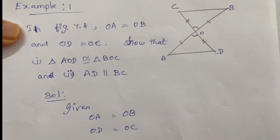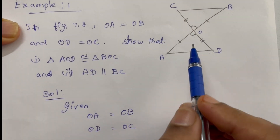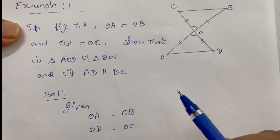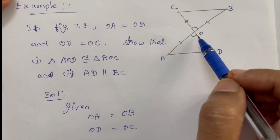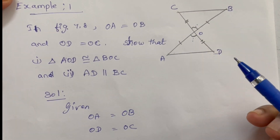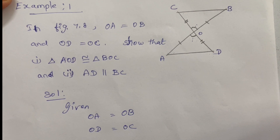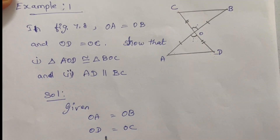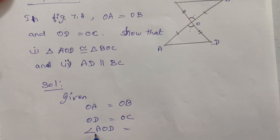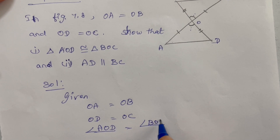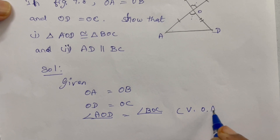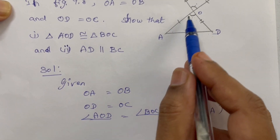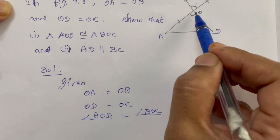Now, the two sides are equal. For the angle condition, in triangles AOD and BOC, the included angle AOD equals angle BOC. The reason is Vertically Opposite Angles — that is why these two angles are equal.